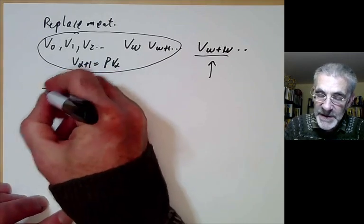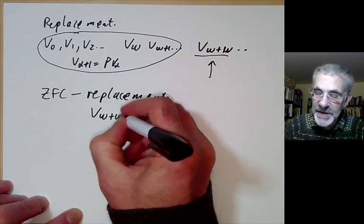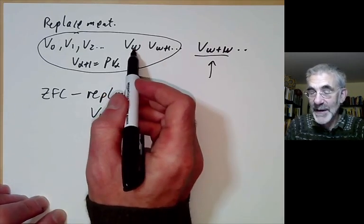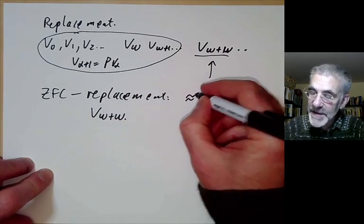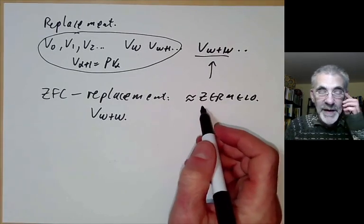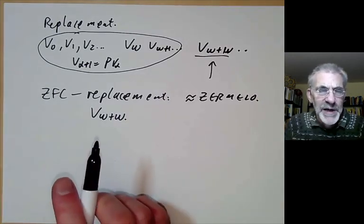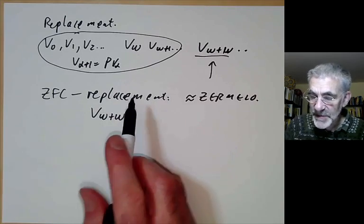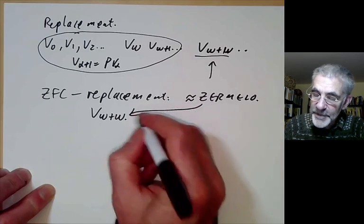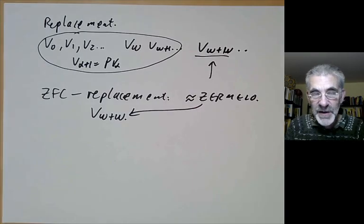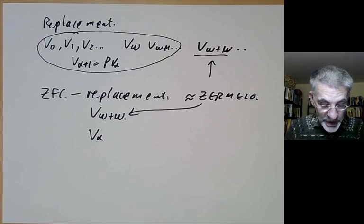We can also find models for Zermelo-Frenkel set theory minus replacement. An obvious model is the set V_{ω+ω} — you apply the power set operation a countable number of times to the hereditarily finite sets and take their union. Zermelo-Frenkel set theory minus replacement is more or less Zermelo's original 1908 axioms for set theory. It's not quite the same because he didn't have foundation, which is a fairly mild axiom. V_{ω+ω} is more or less a model of Zermelo's original 1908 axioms. Similarly, you can take V_α whenever α is a limit ordinal greater than ω, and that will again be a model for Zermelo's axioms.